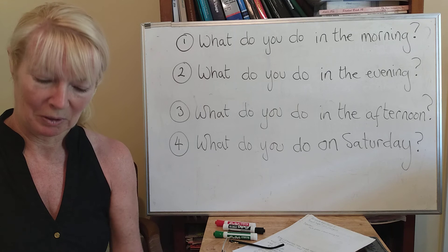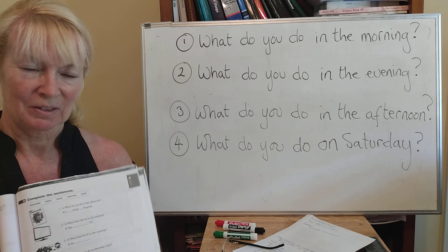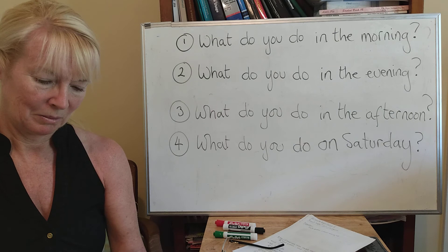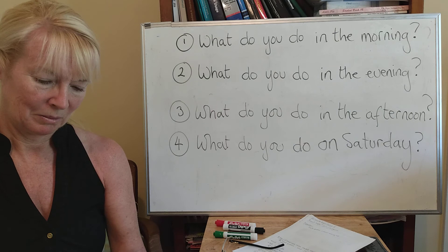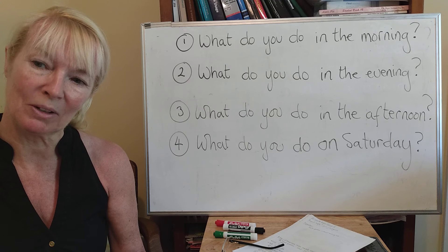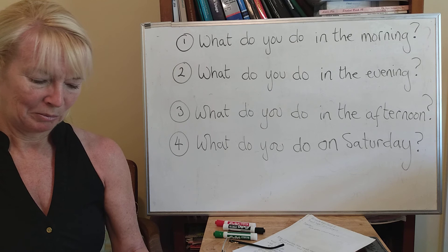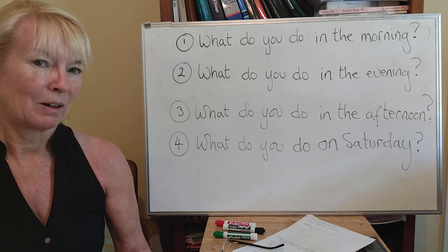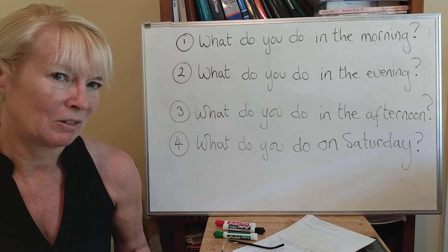Open your workbook again to page 69 and let's look again at those answers. Number one: What do you do in the morning? I play soccer. Number two: What do you do in the evening? I pay bills. Number three: What do you do in the afternoon? I go shopping. Number four: What do you do on Saturday? I go to the park.